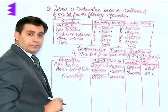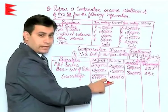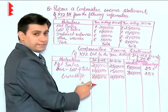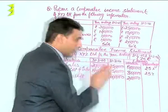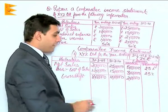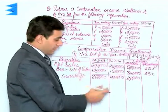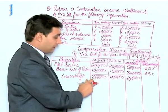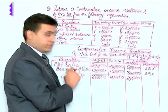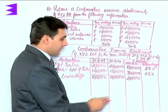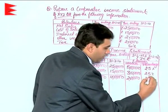Coming to gross profit: previous year was 8 lakhs and current year is 10 lakhs. The absolute change is calculated as current year minus previous year, that is 10 lakhs minus 8 lakhs, which gives 2 lakhs. The percentage change is 2 lakhs divided by 8 lakhs into 100, which is again 25 percent.